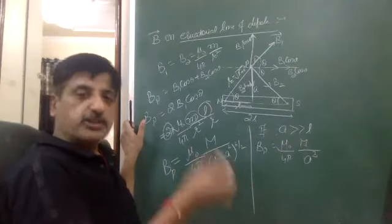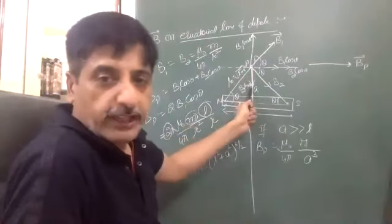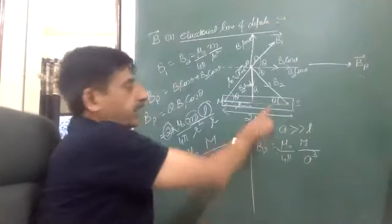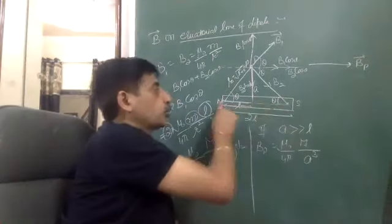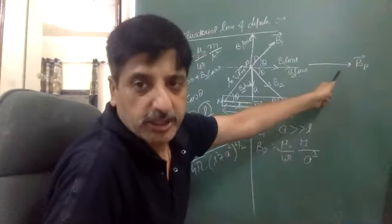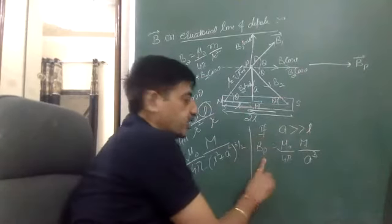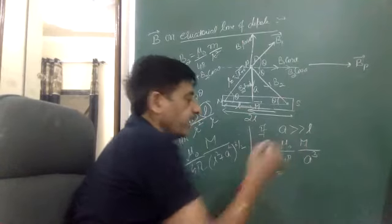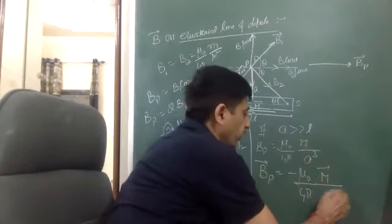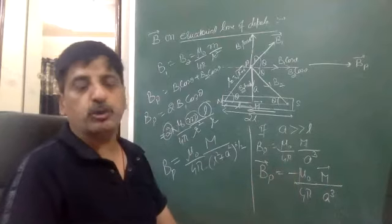For the direction: B1 sin theta and B2 sin theta cancel each other, while B1 cos theta and B2 cos theta add together, giving the resultant magnetic field in that direction. If the magnetic dipole moment is south to north, the resultant equatorial field is opposite to the dipole moment. In vector form: B = -(mu0 by 4pi) · m-vector over a cubed.